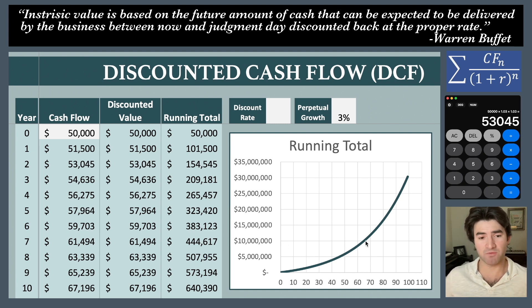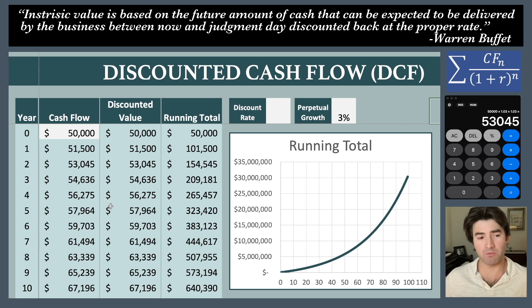You can see now the cash they've generated has climbed from five million to thirty million dollars over the course of 100 years. However, we haven't considered the discount rate, which is pretty important.